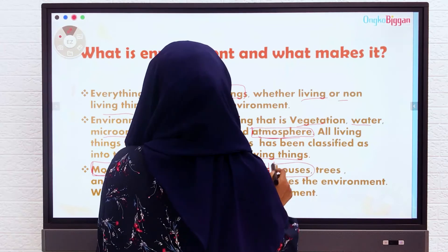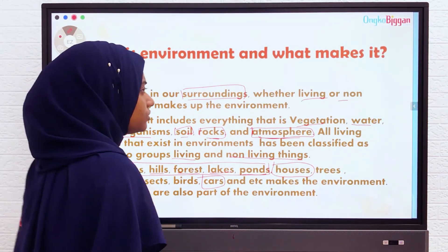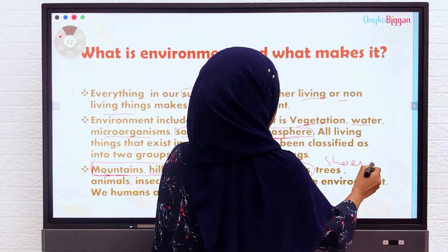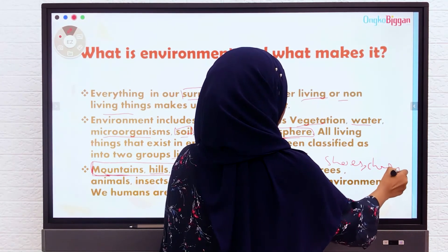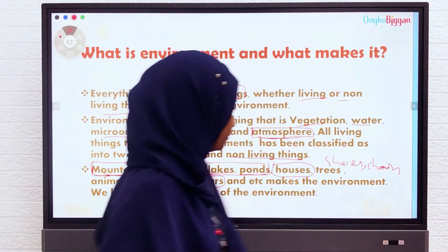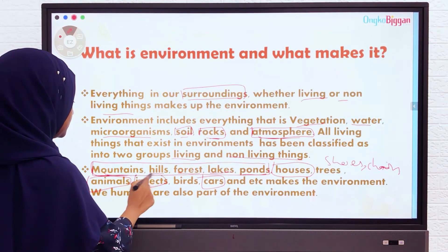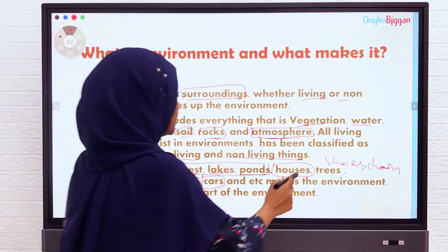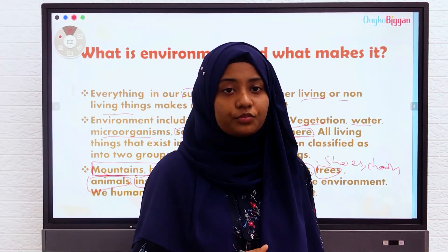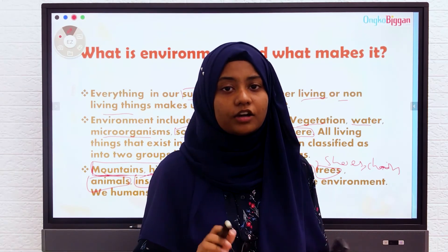Houses, cars, shoes, and chairs are all non-living things. Whereas ants, animals, insects, birds, and trees are all living things, because they can breathe, they can move, they can grow, and they are natural things.